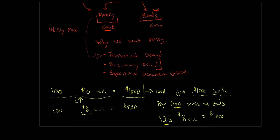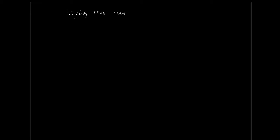Those are our three reasons to hold cash. Let's bring these together and take a look at money demand and a money demand curve. We're going to be building up our liquidity preference framework using a simple graph — just another supply and demand graph — but our price in this case is going to be the interest rate. The cost of money is that foregone interest rate you could have earned on bonds.